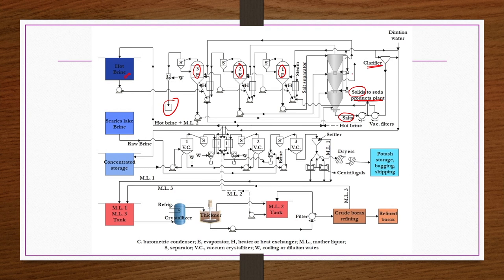In the clarifier, we take the overflow of each of the cones. If solids are present in this overflow, they are separated as underflow of the clarifier and passed through a vacuum filter to remove moisture or brine. Dry solids are taken to the soda products plant. The brine or mother liquor recovered from individual evaporators and vacuum filters is fed back to the hot brine, whereas the overflow of the clarifier is rich in potash plus borax and is very concentrated.